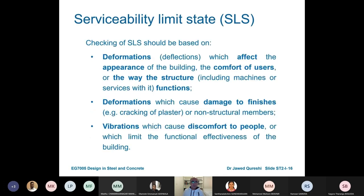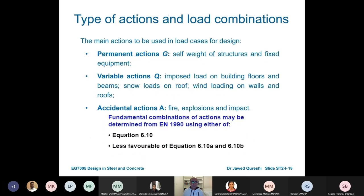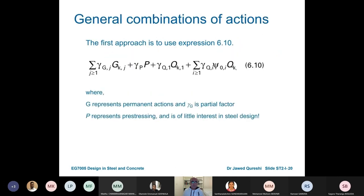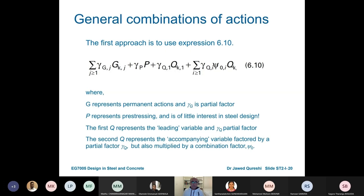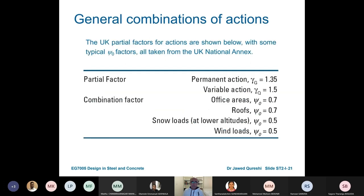There are different design situations: persistent, transient, and seismic. We have permanent actions and variable actions. The general formula is: γG · Gk + γQ · Qk + γQ · ψ · Qk. There are two equations, 6.10 and 6.10b. The partial safety factor for permanent load is 1.35 and for variable action it is 1.5.